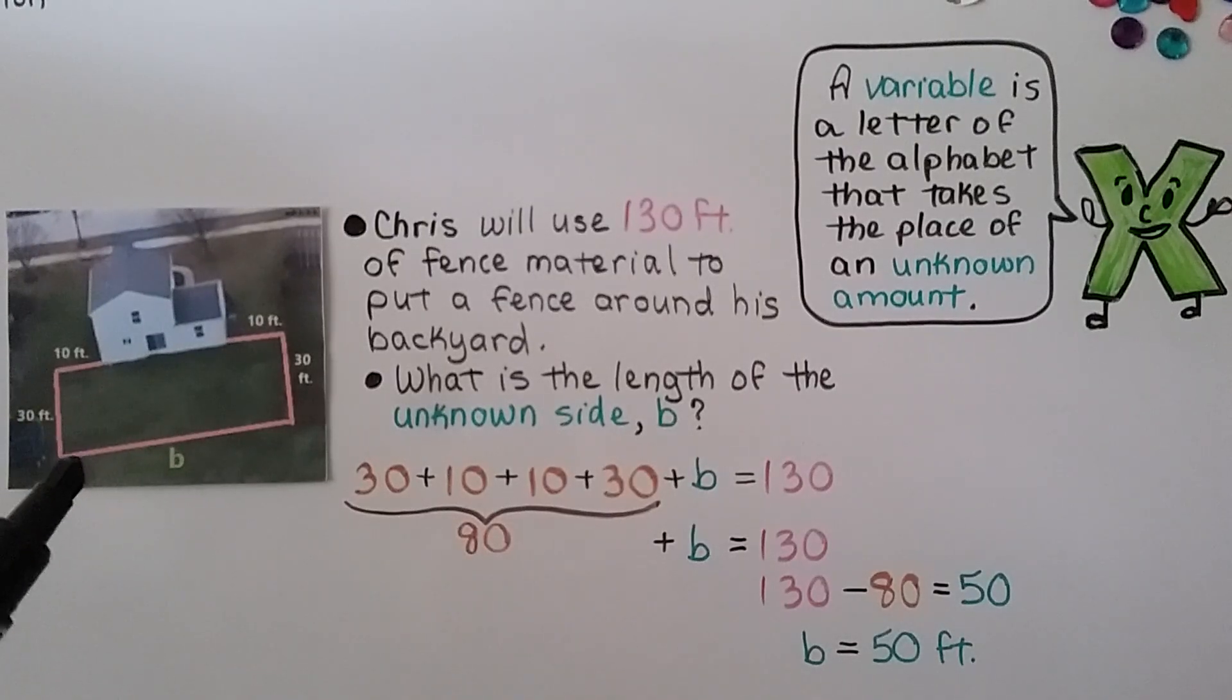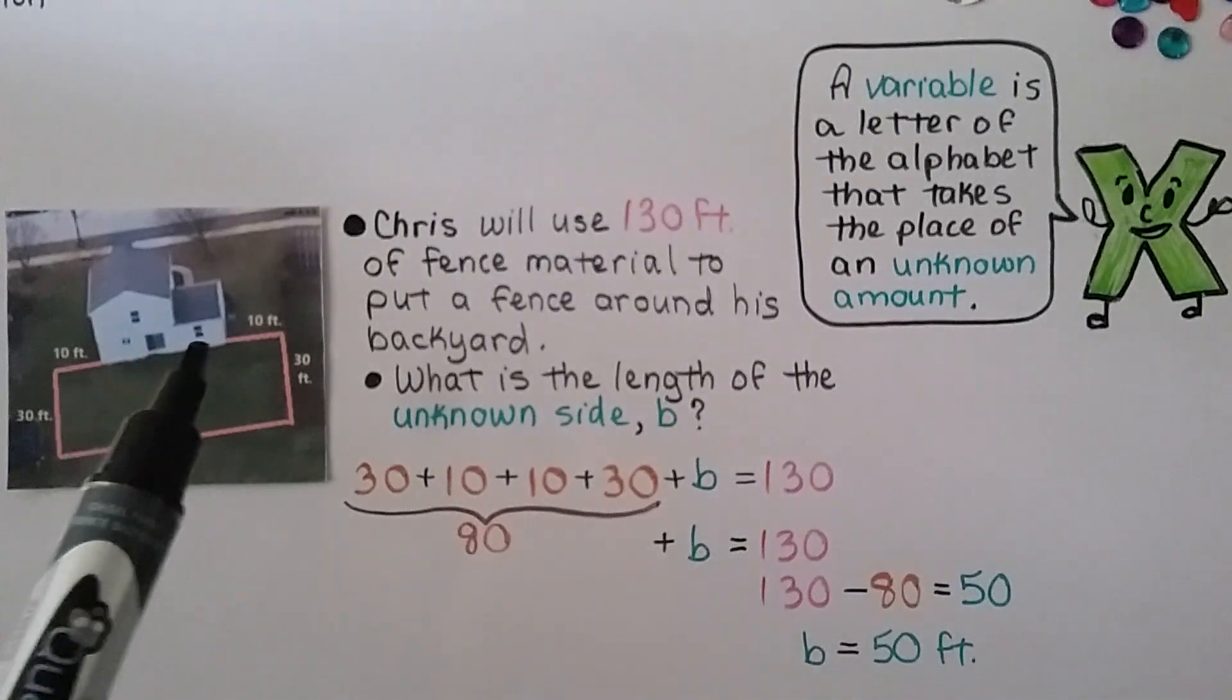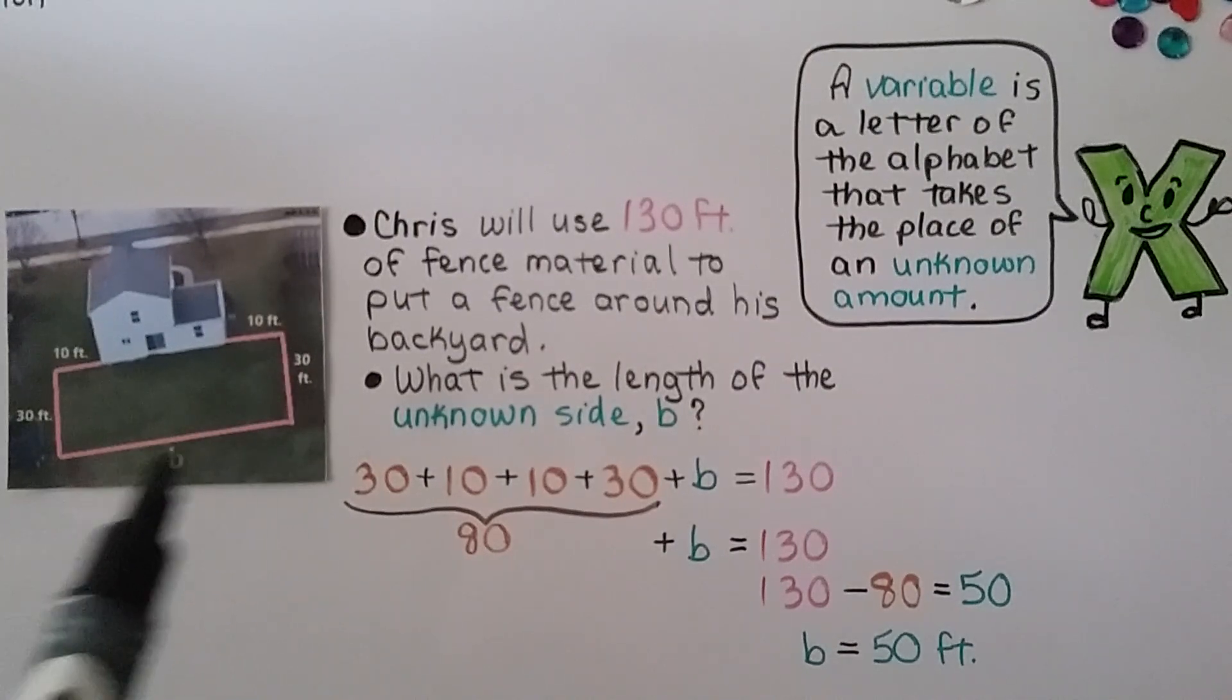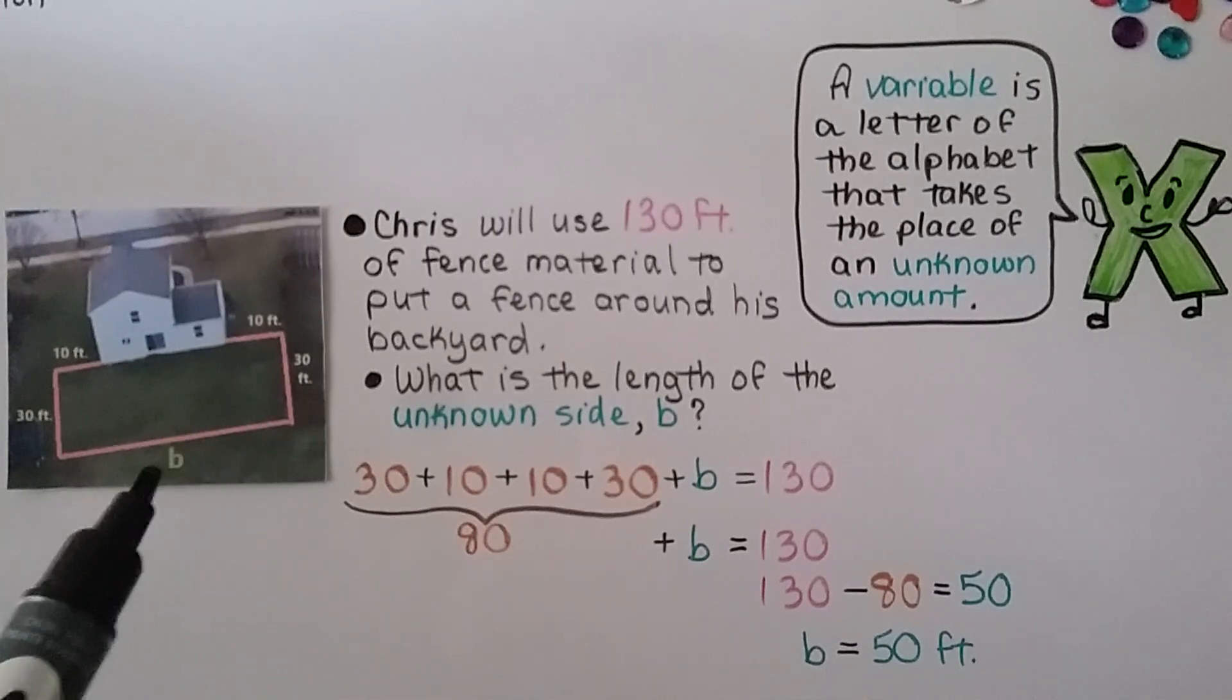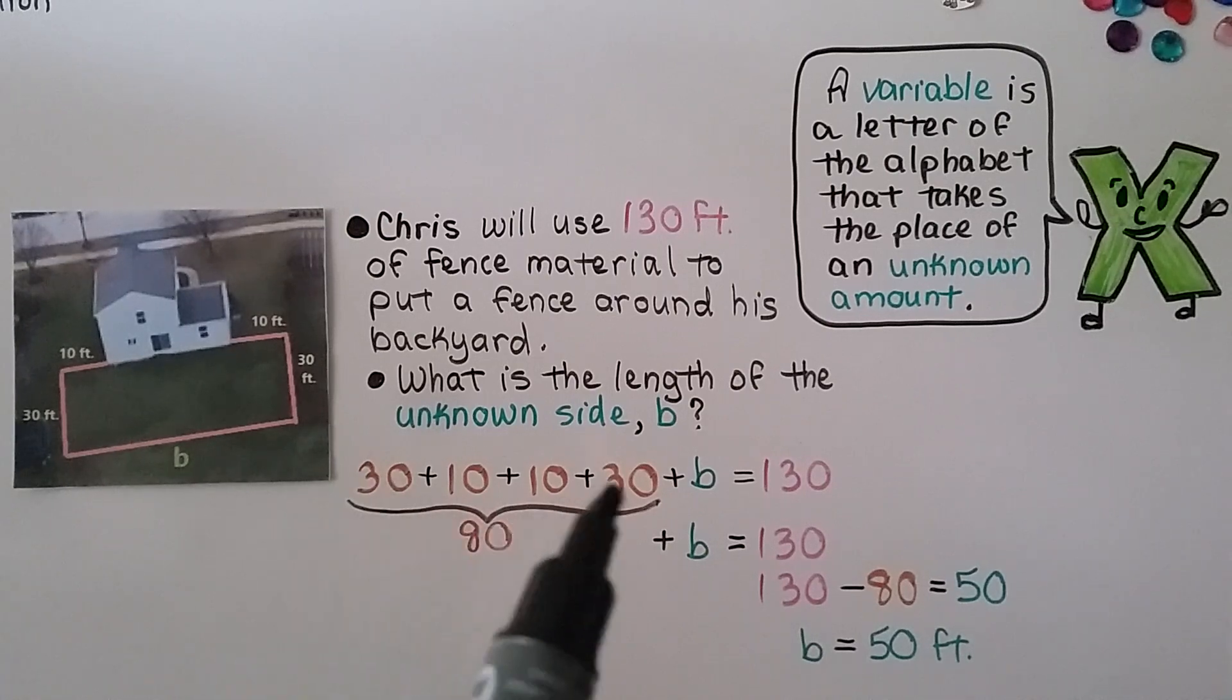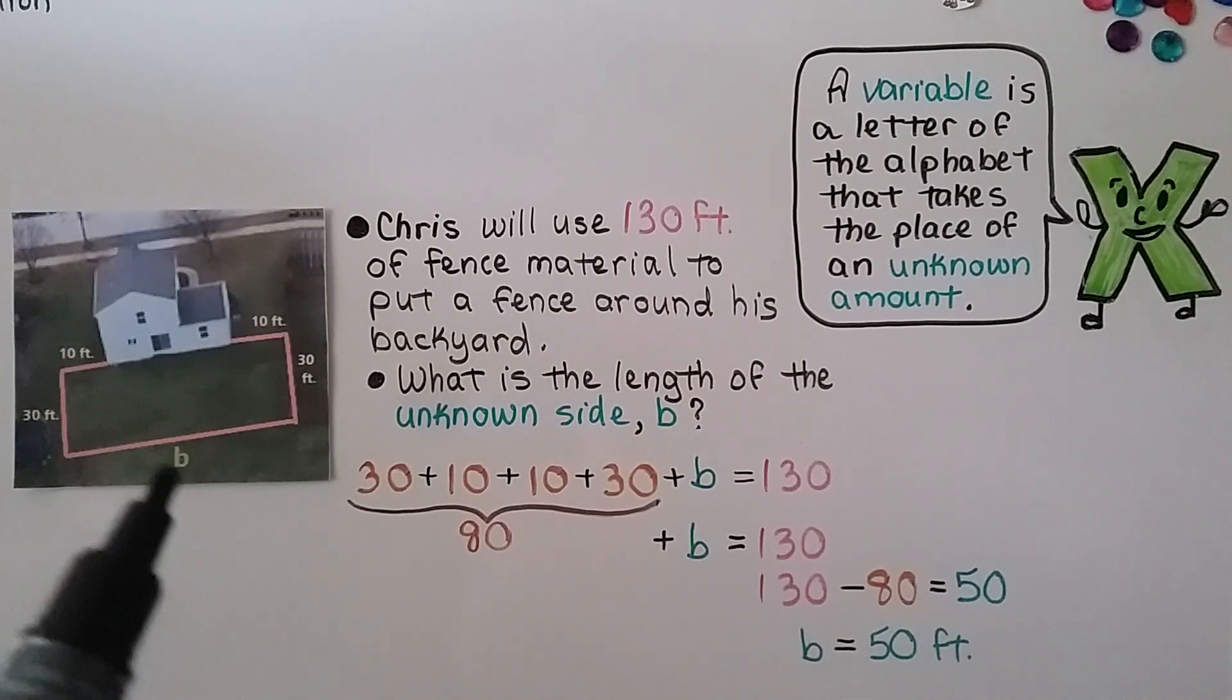Take a look at this picture of the house. Here's a house and it's going to have a fence around it. So Chris will use 130 feet of fence material to put a fence around his backyard. Now notice there's no fence here where the house is. There's 10 feet of fence here, 10 feet of fence here, 30 feet here, and 30 feet here, but we don't know what this side length is. So what is the length of the unknown side b? We add the 30 plus 10 plus 10 plus 30 plus that variable b, and it will equal 130, the amount of fence material that he'll need to use. We total up the given amounts we do know and we get 80. That means 80 plus b will equal 130. Now we subtract this 80 from the amount 130. 130 minus 80 equals 50. That means 50 is left. That's the difference. b must equal 50 feet.